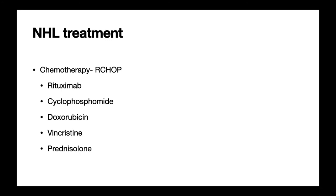The treatment of non-Hodgkin's lymphoma follows similar key principles to Hodgkin's: chemotherapy and radiotherapy. The chemotherapy agents differ — R-CHOP or CHOP are the key regimens used. R-CHOP includes rituximab, cyclophosphamide, doxorubicin, vincristine, and prednisolone. Radiotherapy is considered if needed, along with supportive care.